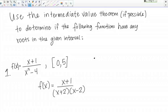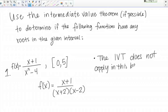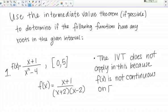So, whenever you're answering these questions about Intermediate Value Theorem, you always want to be very careful about stating your logic and why or why not the theorem applies. So in this case, I'm just going to say the Intermediate Value Theorem, often abbreviated IVT, does not apply in this case because f of x is not continuous on 0 to 5. And that would be my answer in this case.